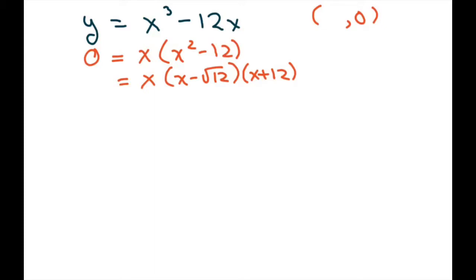So we have three critical values. So that's going to be square root of 12, negative square root of 12, and then 0, 0.